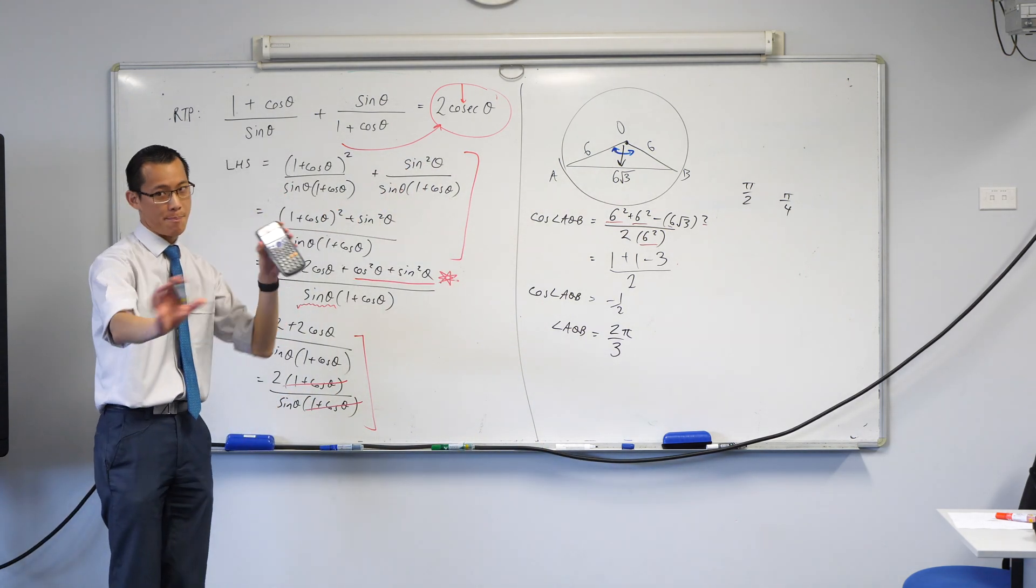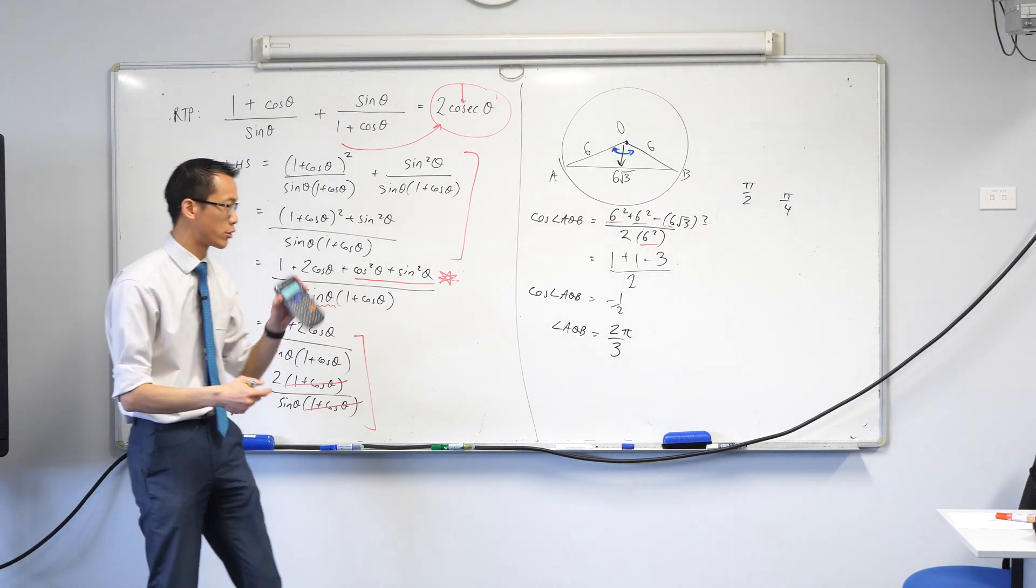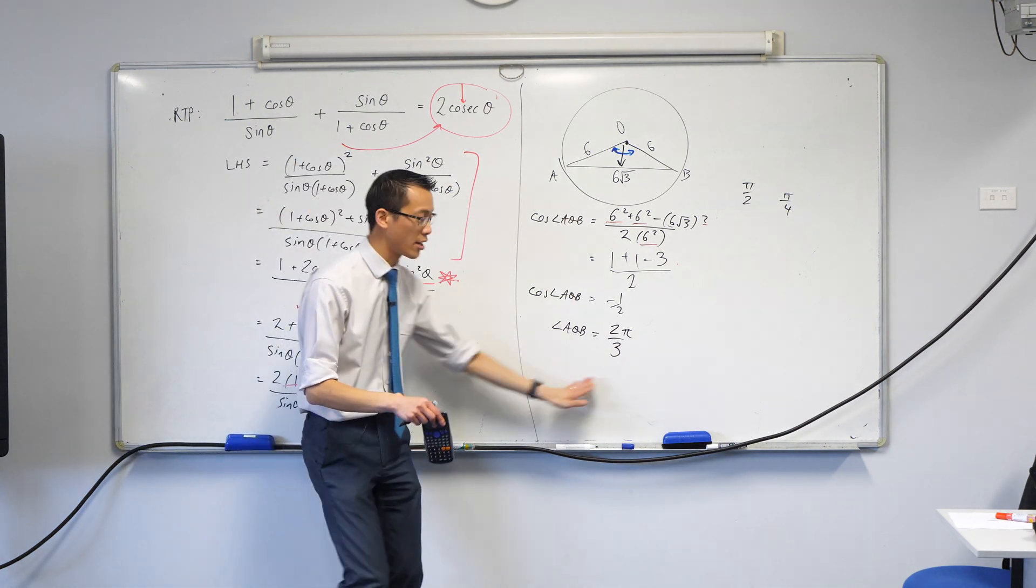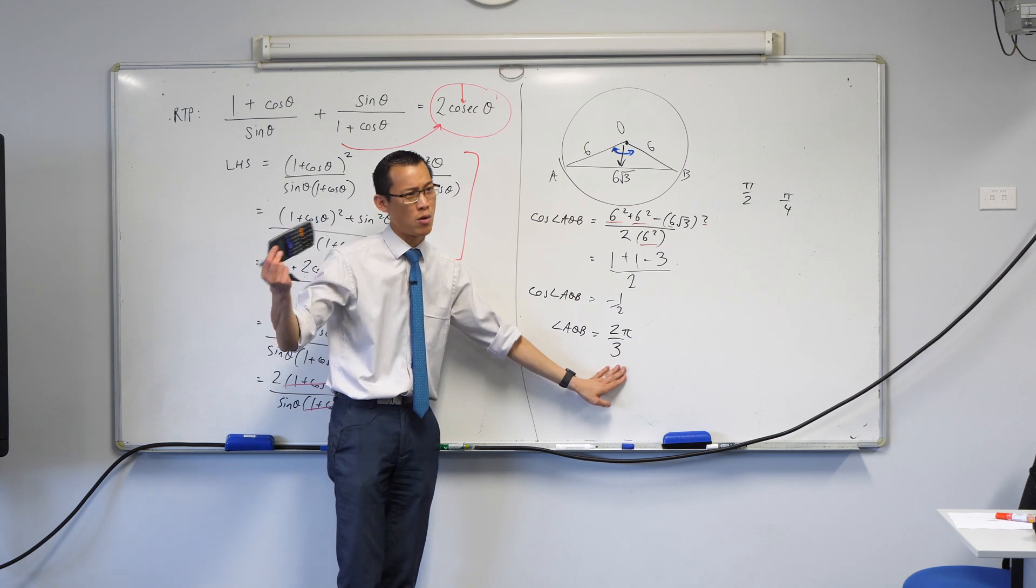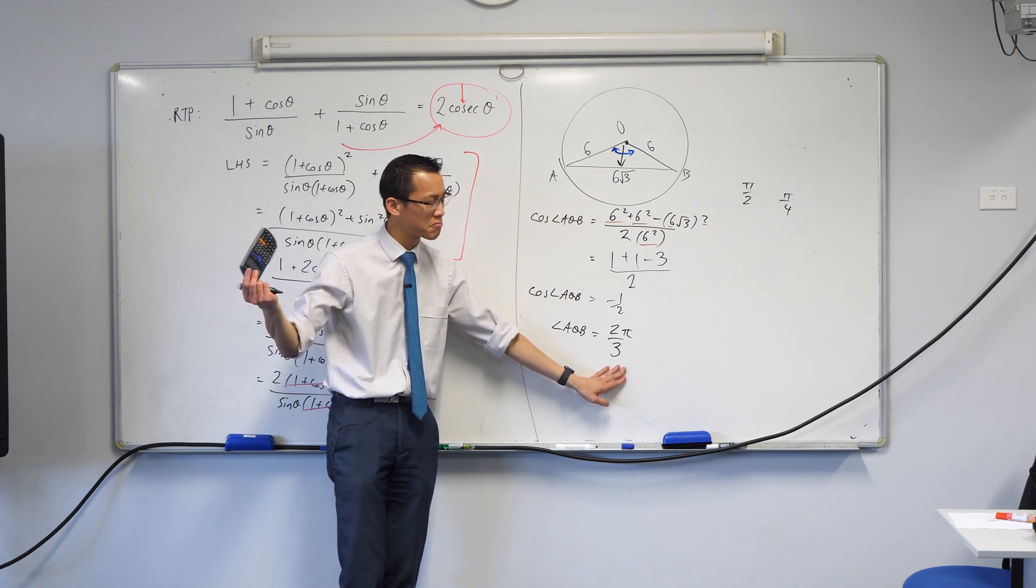Now, some of you, of course, will be like, I prefer degrees. If you do this in degree mode, it will tell you 120 degrees and then you can convert back. But like when the calculator can do it for you, why wouldn't you? Does that make sense? Okay.